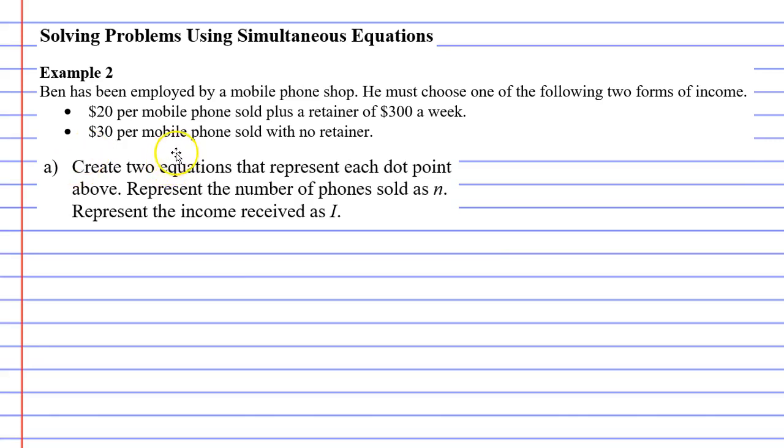If you're a really good salesman, meaning you can sell a lot of mobile phones, then you would be more interested in the second dot point. Whereas if you're not very good at selling the mobile phones, then you probably want the first dot point. You probably want the retainer.